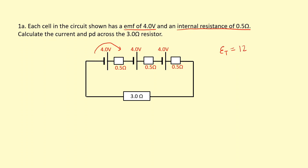The total resistance of the circuit is straightforward because the current has to go through all of these resistors including the internal resistance — you just add up all the resistance. Total resistance equals 0.5 times 3 plus the 3 ohms, which gives 4.5 ohms in total.